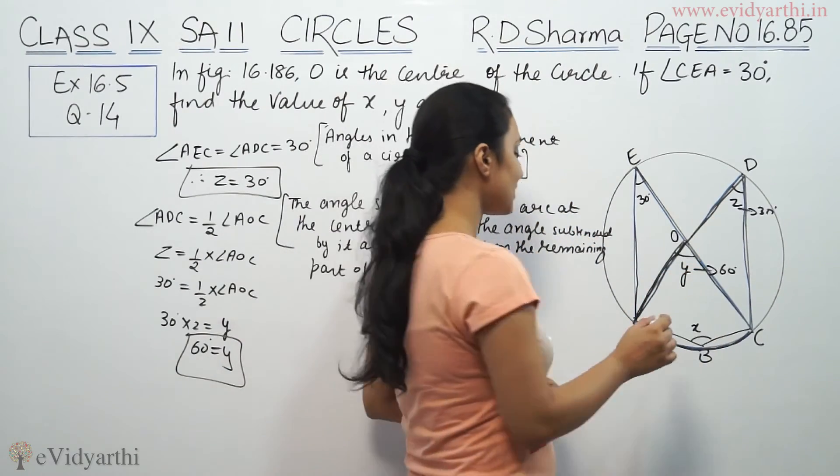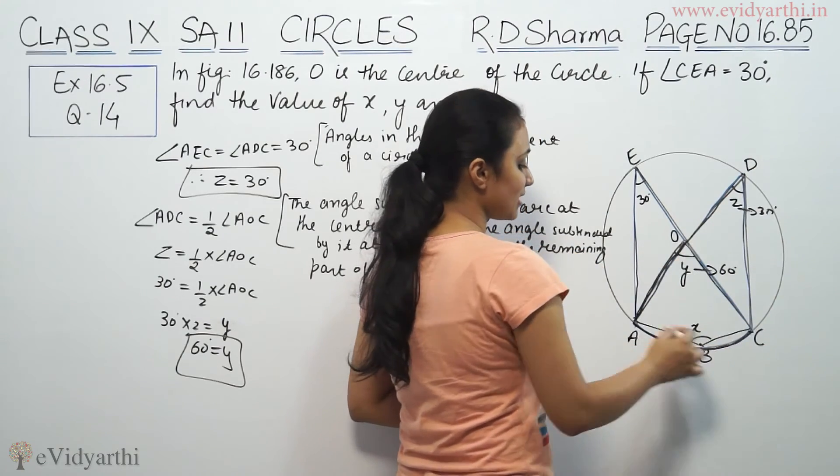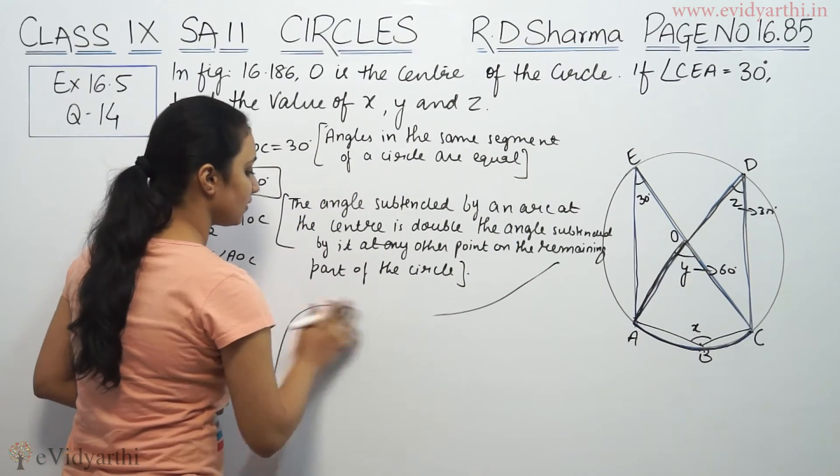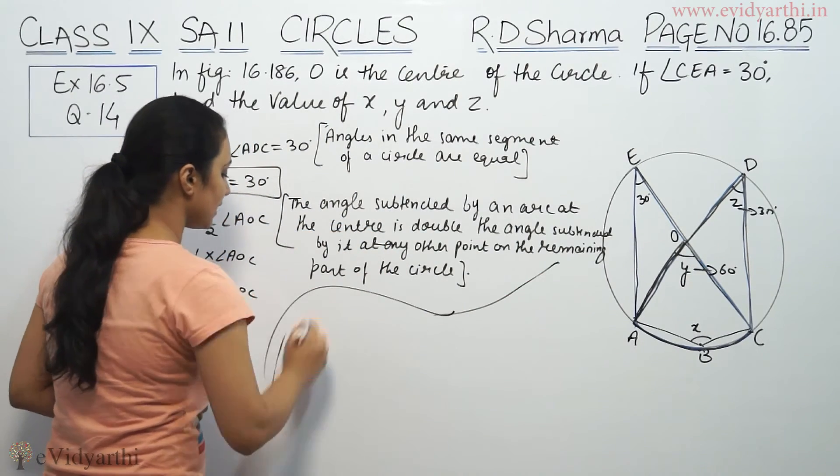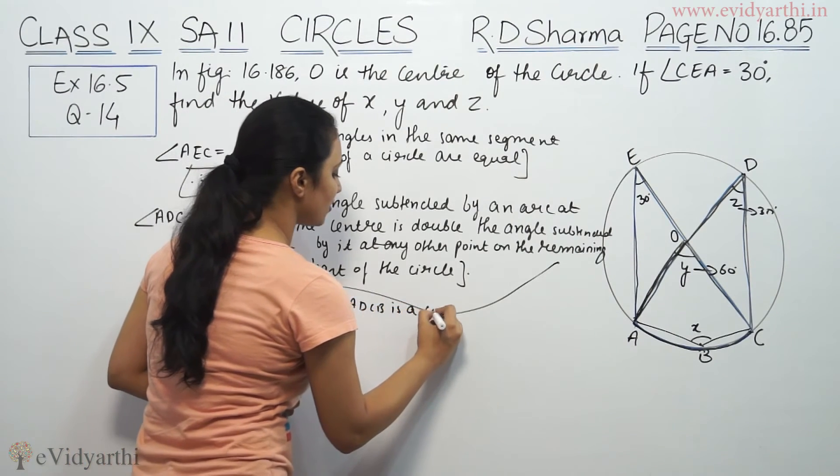Now we need X. You see this ABCB is a cyclic quadrilateral. These points are touching the circle. Since ABCB is a cyclic quadrilateral...